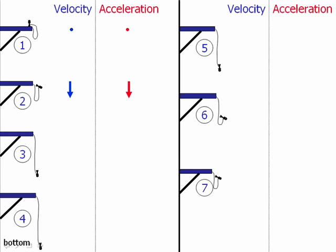At motion three, you're still moving downward, so your velocity vector is still downward. But now the bungee cord is causing you to slow. And when an object is slowing down, the acceleration vector has to point in the opposite direction of the velocity vector — in this case, that would be up.